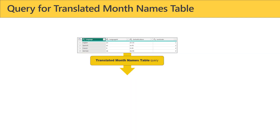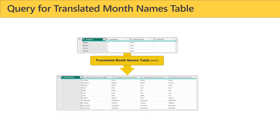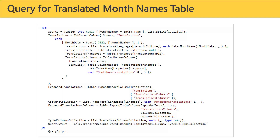The first query and the table it creates are both named translated month names table. We reserve the name translated month names for the field parameter we'll create shortly. This query produces one column for every row in the languages table, and uses the default culture to figure out how to build the month name. Looking at the M code — as hard as it is to understand, you don't need to understand it; you need to copy and paste it. We tried hard to keep any column names out of it, so as you add and remove languages, this code never has to be updated.